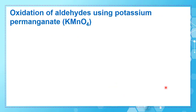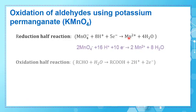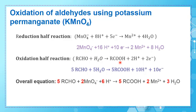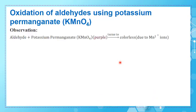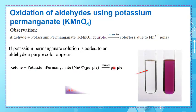Finally, potassium permanganate, KMnO₄: MnO₄⁻ is reduced to Mn²⁺, and the aldehyde is oxidized to a carboxylic acid. The key observation is that potassium permanganate has a purple or violet color; when added to an aldehyde, the purple color disappears and the solution becomes colorless due to Mn²⁺ ions. If potassium permanganate is added to a ketone, the purple color remains.